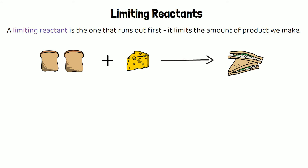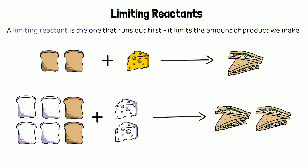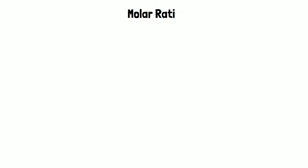To represent the chemical reaction, let's say we take two slices of bread and one piece of cheese to make one cheese sandwich. If we had six slices of bread and two pieces of cheese, we'd use two slices of bread and one piece of cheese per sandwich. After two sandwiches, the cheese runs out — cheese is the limiting ingredient. We have two slices of bread left over, so bread is the ingredient in excess.